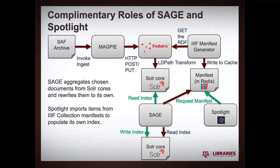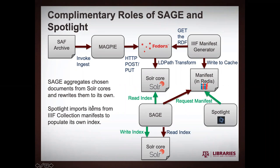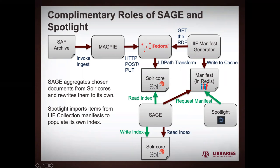At this stage of the game, we have a nice Solr core that Fedora has written to and a nice IIIF manifest that we can read from. Spotlight is equipped to actually read that collection manifest and make its list of items — that's something we do have in production right now, and we have some Spotlight collections out there for people to enjoy. SAGE is going to be reading from Fedora's Solr index, doing the mappings, and then writing to its own Solr index.